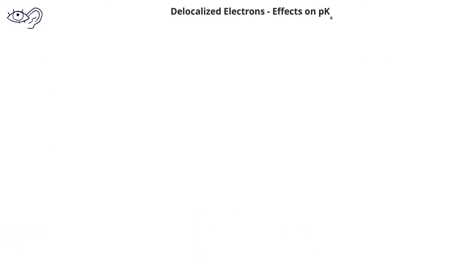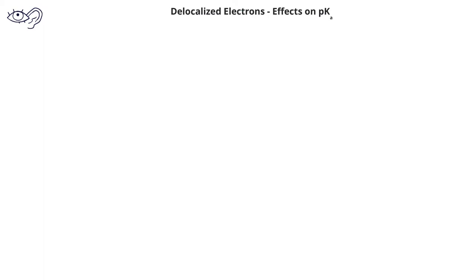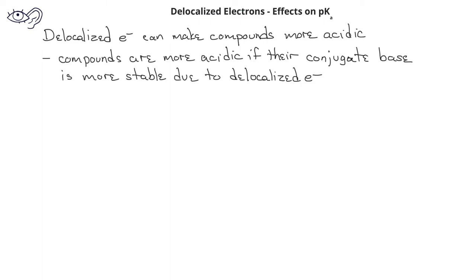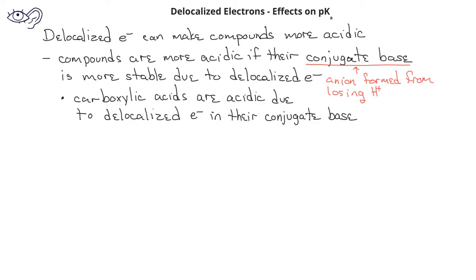Delocalized electrons can also affect the acidity of compounds. In effect, delocalized electrons can result in compounds with lower pKa values. We've previously learned that compounds will be more acidic if the anion formed from losing the hydrogen ion is more stable. For many organic compounds, delocalization of electrons can stabilize the anions formed from losing a hydrogen ion.